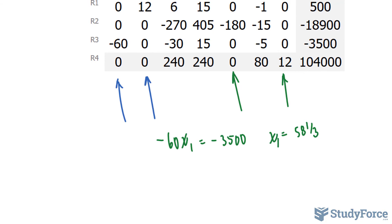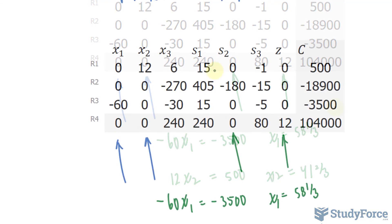What about the second column? We have 12 x sub 2. And that was equal to 500. Solving for x sub 2, which was for corn, 41 and 2 thirds. So 41 and 2 thirds acres should be dedicated to corn to maximize profit.